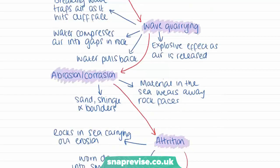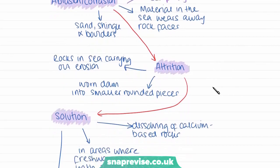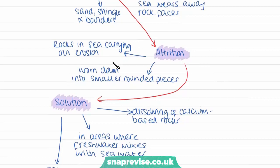Our next process is called abrasion, also called corrasion. This is when material carried within the sea wears away the rock faces — things like sand, shingle, which is larger pebbles, and bigger boulders carried by the water. They hit against the rock and wear away its surface when washed upon the beach by waves — very much like a scraping effect. Then we have attrition: the rocks and sediments in the sea, such as sand and boulders, when they hit each other and onto bigger rocks on the coastline, are worn down into smaller rounded pieces. Attrition is the breakdown of the materials that are carrying out abrasion.